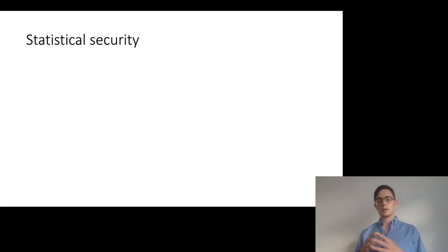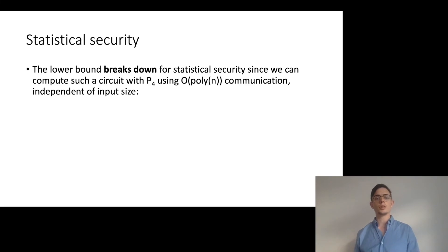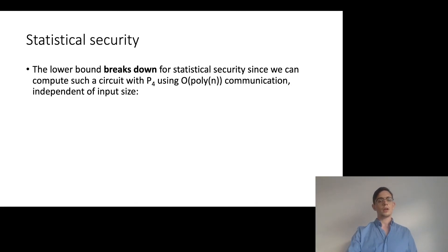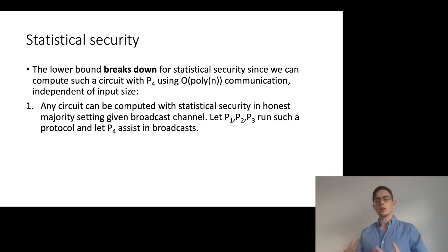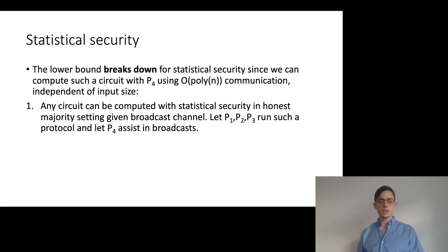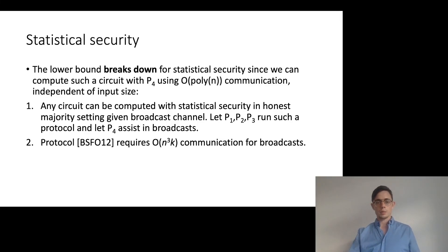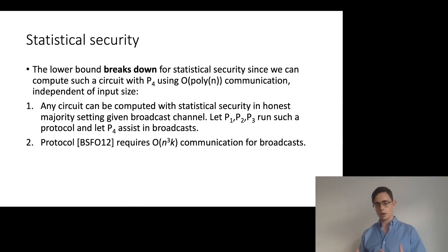A brief note on statistical security: our lower bound really only applies to perfect security. For statistical security, the bound breaks down because we can compute a circuit using communication for one party that is independent of the input size. We can compute the circuit with statistical security in an honest majority setting given a broadcast channel, letting P1, P2 and P3 run such a protocol with P4 only assisting in broadcasts. The protocol by Ben-Sasson et al. requires n^3·k communication in terms of broadcasts, meaning P4 is only doing n^3·k communication — independent of the input size. For this reason, our lower bound doesn't apply in this setting.